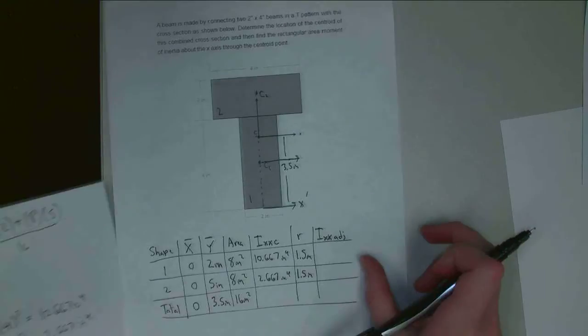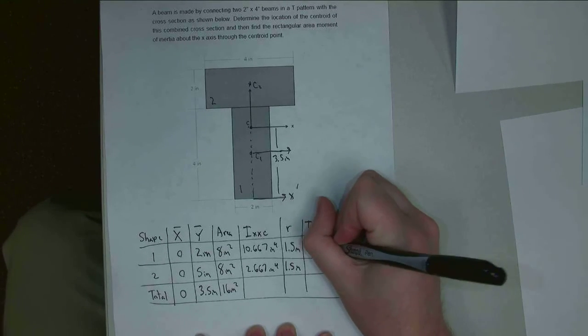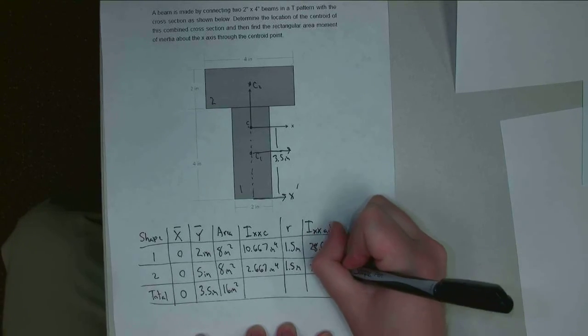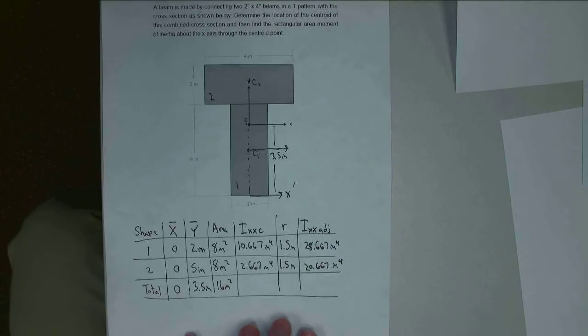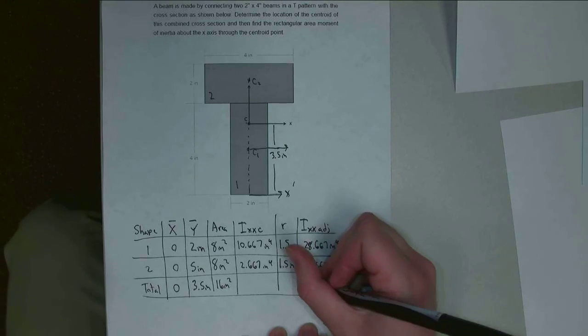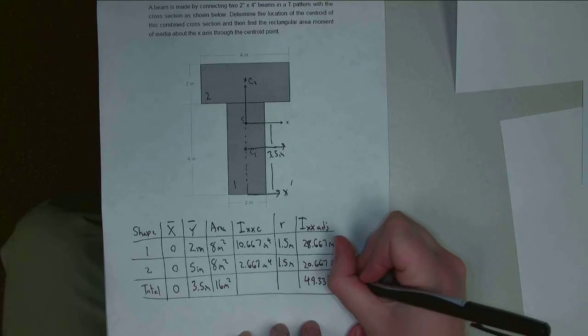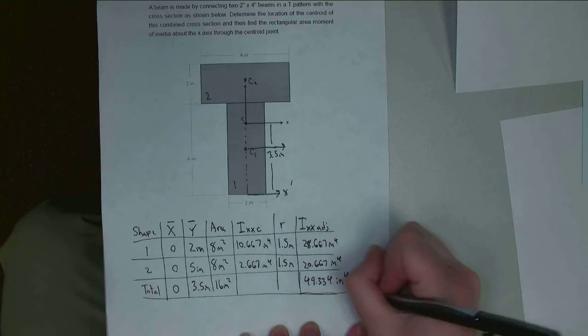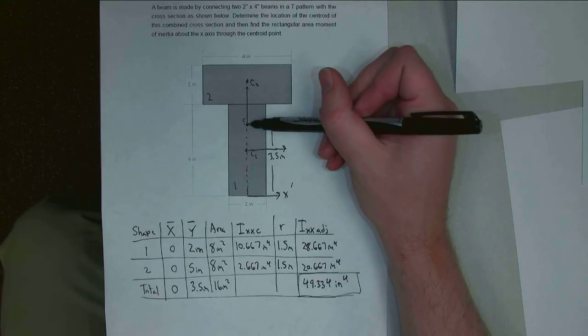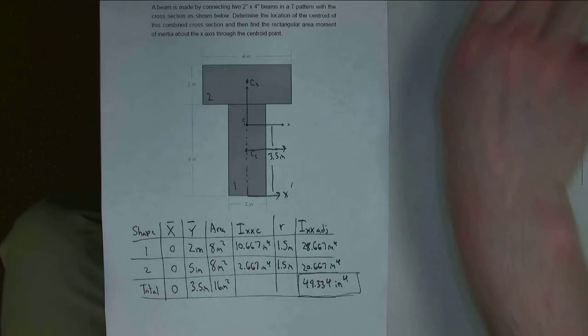And so let's plug those into our table. So for our table, we had 28.667 inches to the 4th, and 20.667 inches to the 4th. And now that they're adjusted, we can simply add them. And so if I add 28.667 plus 20.667, I wind up with 49.334 inches to the 4th. And that is the area moment of inertia of this T shape about its combined centroid, which is 3.5 inches up from the base. And that's what we wanted for our problem. So with that, thank you for watching, and I hope to see you again.